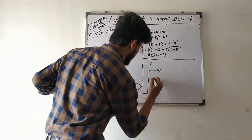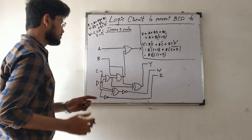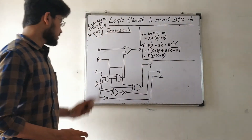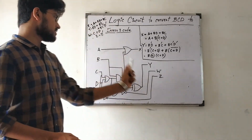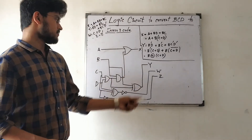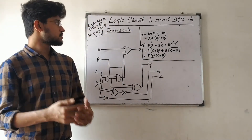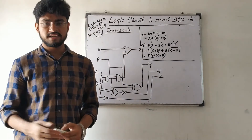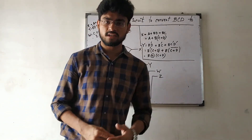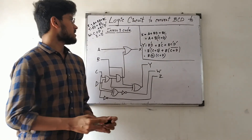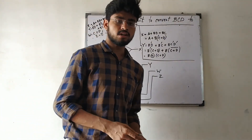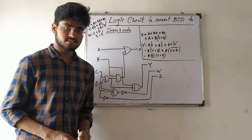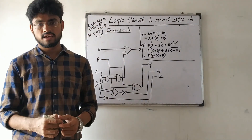For Z = D̄: we simply invert D using a NOT gate to get Z. This completes the logic circuit that converts BCD code into the XS3 code. The four inputs A, B, C, D represent the BCD code, and the four outputs X, Y, W, Z represent the Excess-3 code. In the next lecture, we will start a new topic — the decoder circuit.